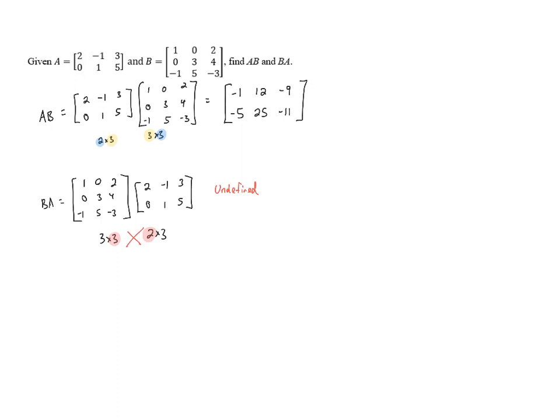So for A times B and B times A, the only product that we can actually do is A times B, which is this 2 by 3 matrix. And that is our final answer.